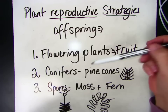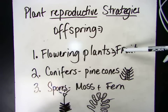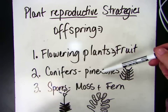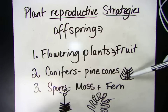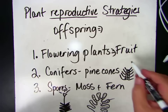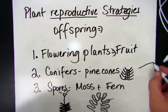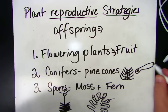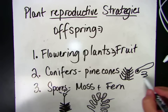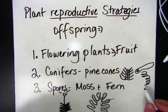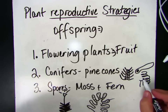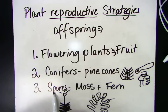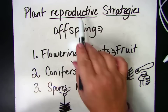So those are the different reproductive strategies. Flowering plants bear fruit; conifers have pine cones. We also talked about those little helicopter things, like the oak trees that make little helicopter seeds — the seed is inside, and it flies by the wind and becomes a new tree. And moss and fern produce spores — that's how they make a new plant and create their offspring.